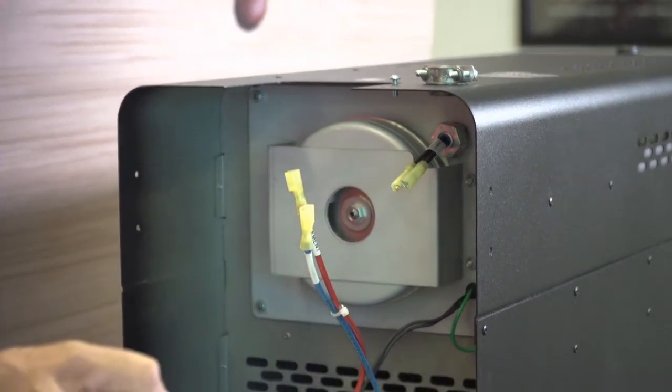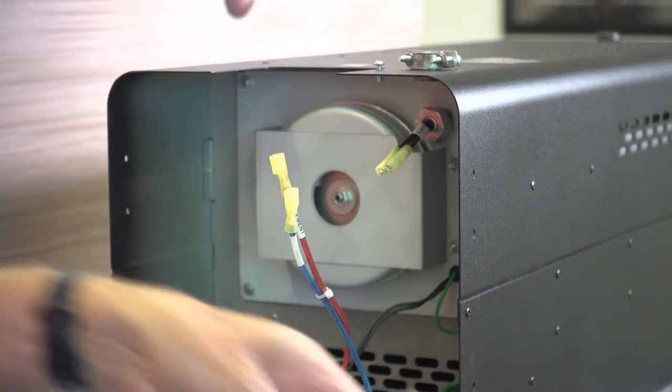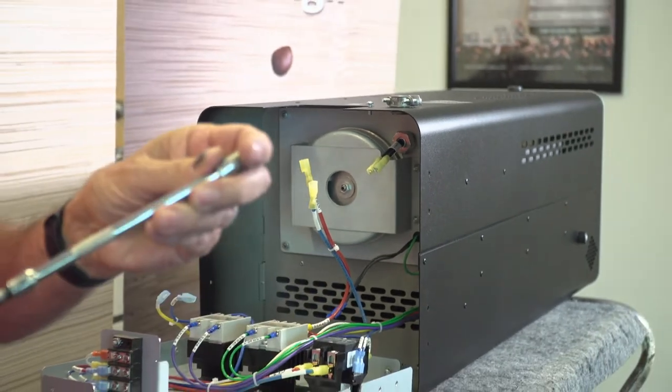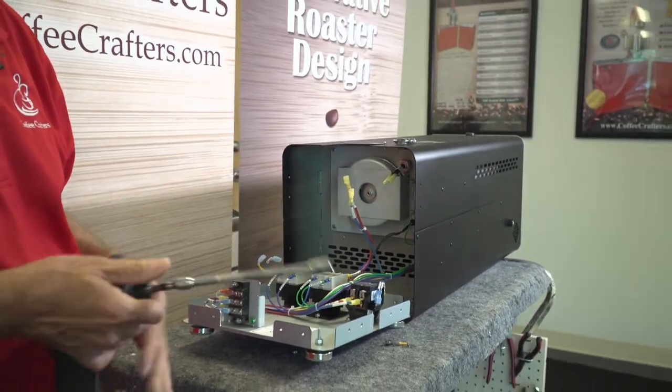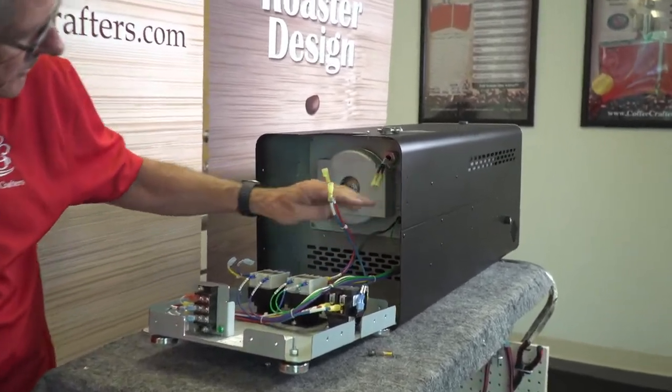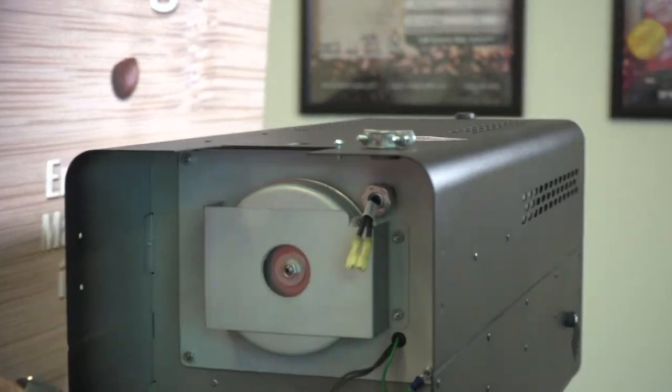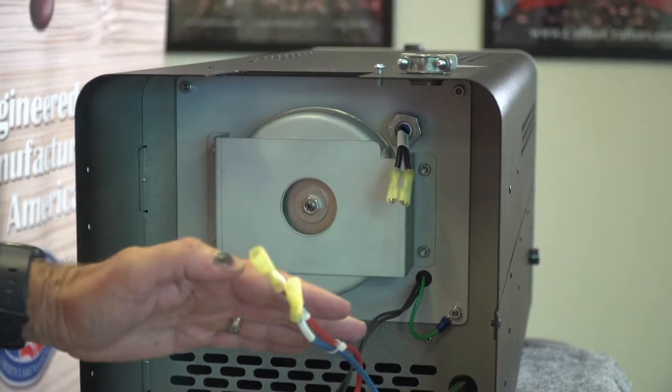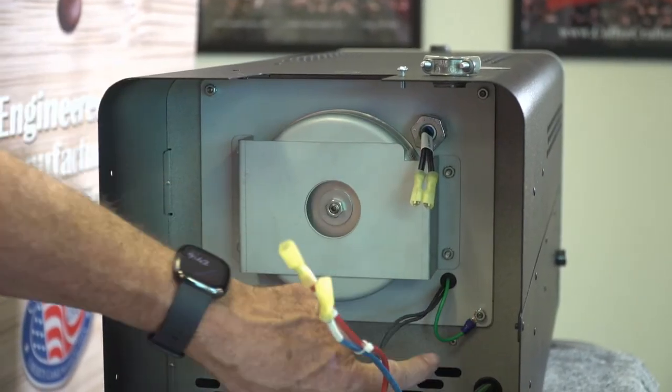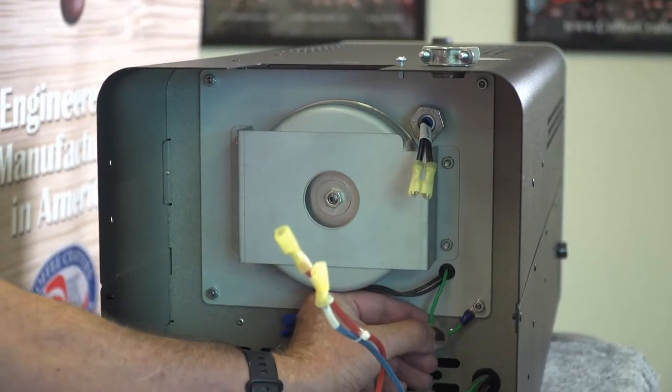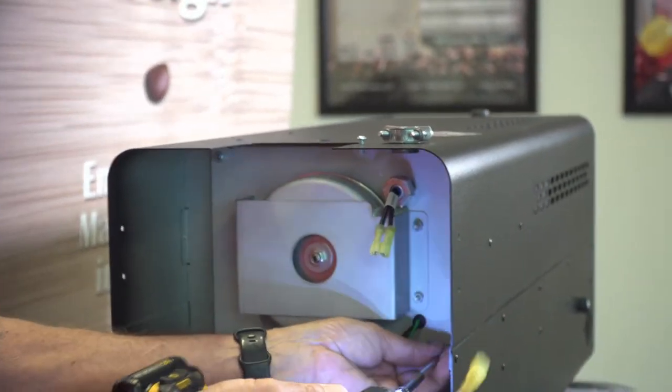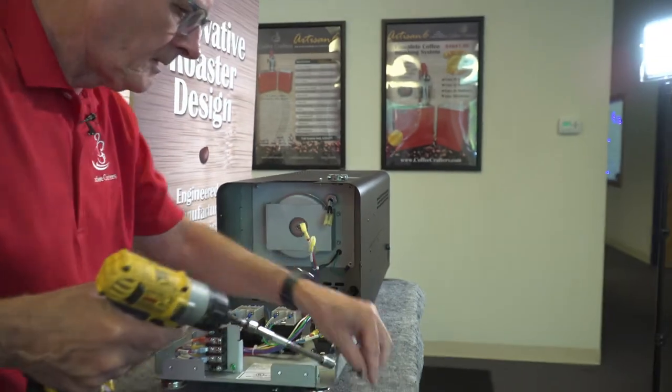Then we're going to use our socket. I'm going to use some power tools to make it faster, but this is an 11-32 socket. All we have to do to remove this motor is to remove these four 8-32 nuts around the side. The one down here in the corner has the ground wire on it. So we're going to take those out and set them aside.